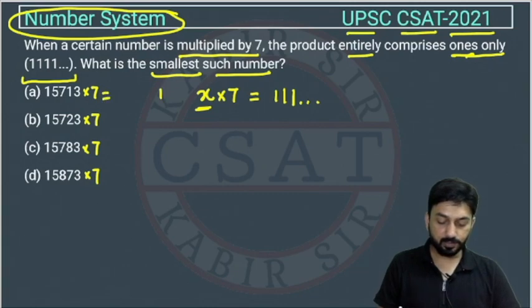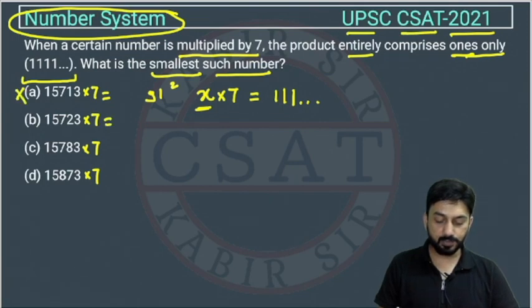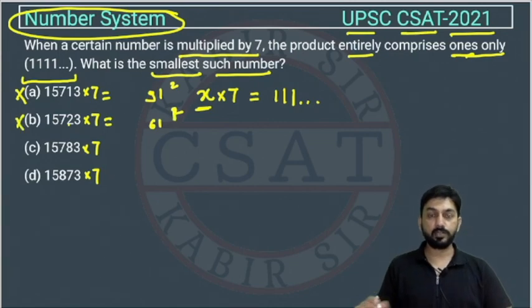7 times 3 is 21. 7 times 1 is 7 plus 2 is 9. So we are getting 9, so this cannot be the option, so cut it. Now second, 7 times 3 is 21, 7 times 2 is 14 plus 2 is 16. We are not getting all digits should be 1, so we are getting 6, so this is also ruled out.